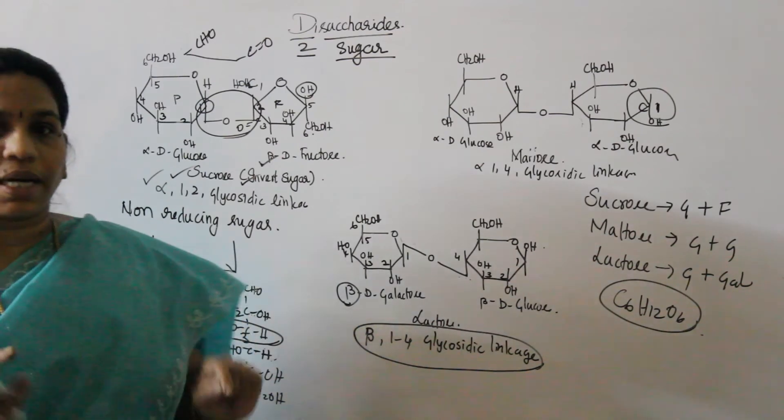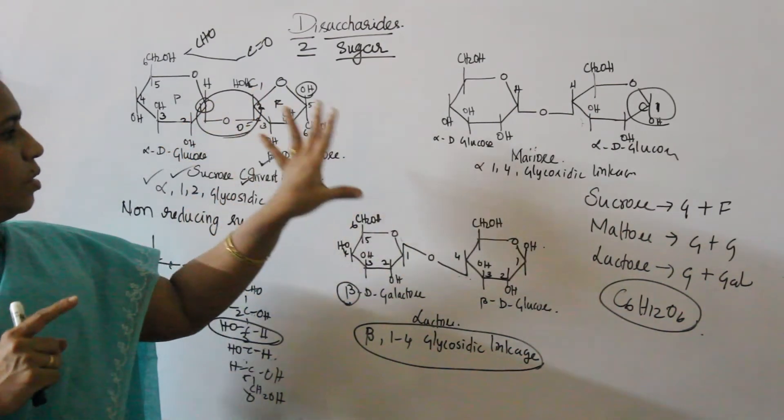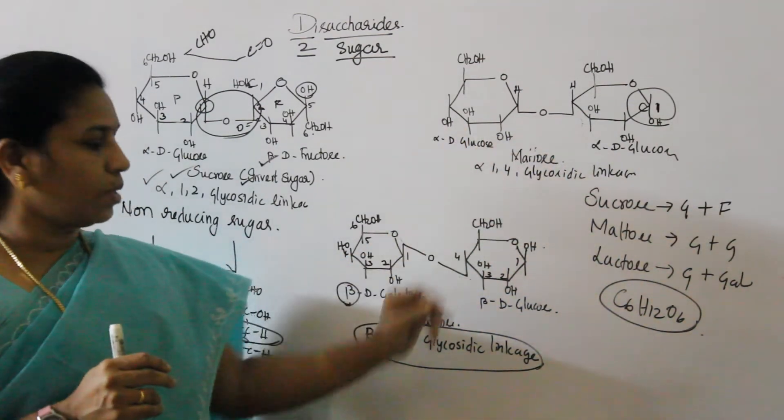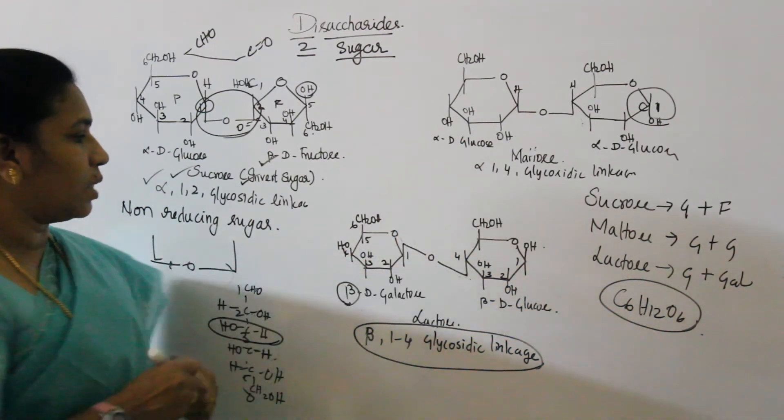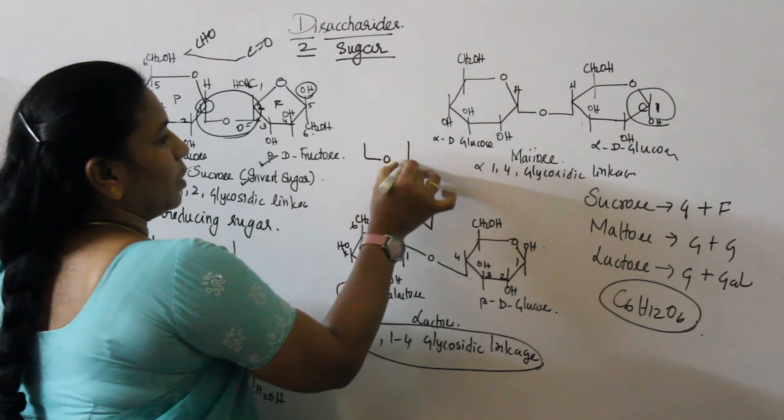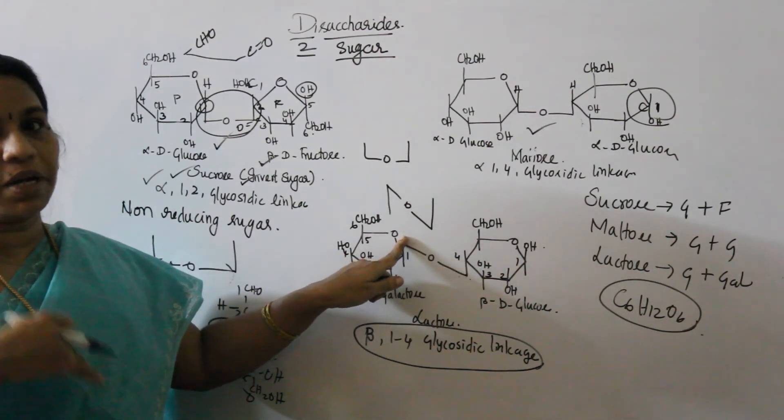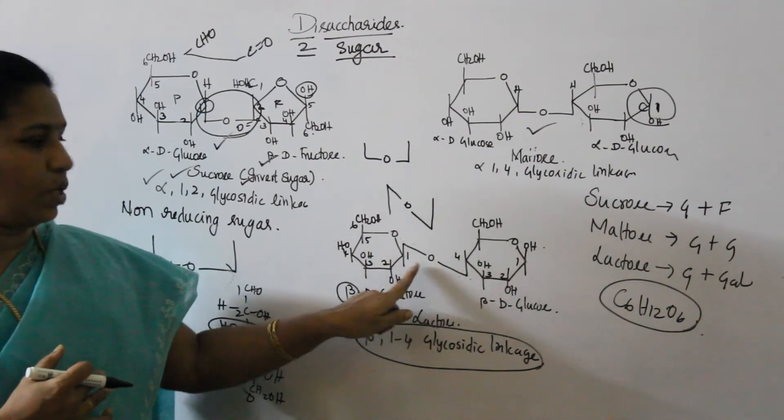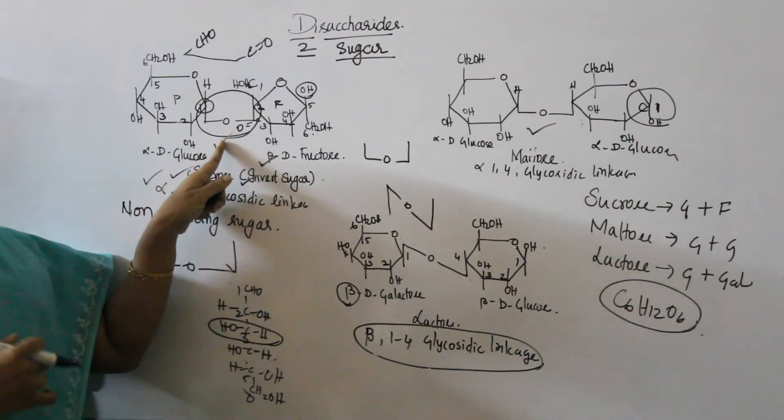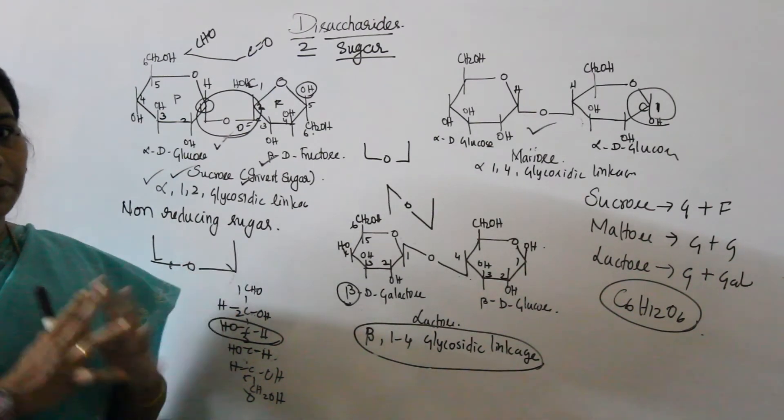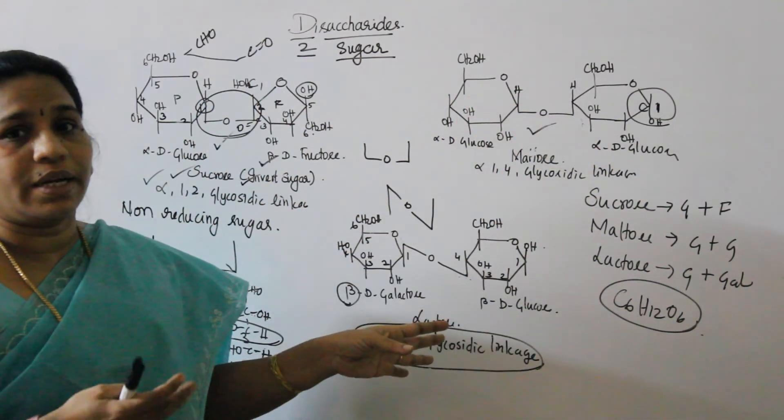Beta 1,4 glycosidic linkage forms lactose. Maltose is 1,4 but with two alpha-D glucose molecules. Lactose has one beta form. This is beta 1,4 glycosidic linkage. In sucrose, the 1 and 2 functional groups are bonded, making it non-reducing sugar. Maltose and lactose are reducing sugars because the aldehyde group is free. This is the concept you have to learn about disaccharides - sucrose, maltose, and lactose structures.